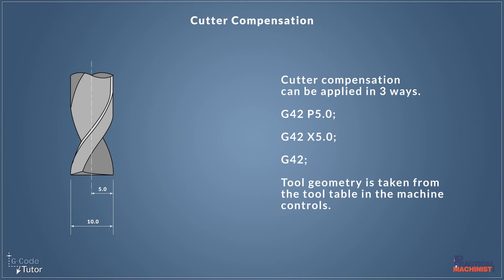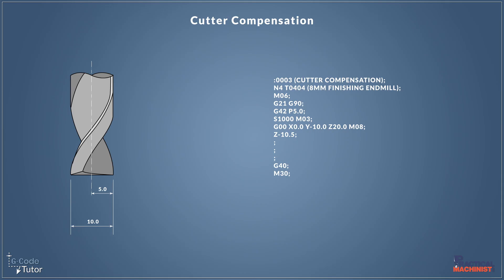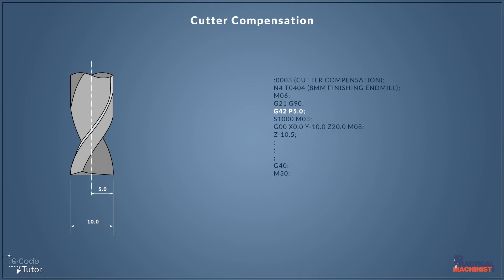So let's take a look at how this might appear inside our G code program. Depending on what method we are using to switch on cutter compensation, we would just state G41 or G42, followed by our P word or X value, or maybe just G42 on its own. We do this before we start any milling with our cutter, and after we have done a tool call. When we wish to disable cutter compensation, we use G40 — normally after all movements have been done — and state G40 to turn off cutter compensation.